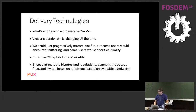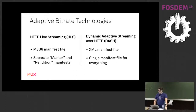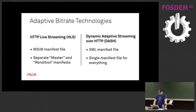So we implement what's known as adaptive bitrate or ABR technologies. We encode multiple bitrates and multiple resolutions, segment the output files into different chunks, and then switch between those chunks based on what bandwidth we saw the last few times. There are two big adaptive bitrate technologies: HTTP Live Streaming (HLS) and Dynamic Adaptive Streaming over HTTP (DASH). All ABR standards work on the basis of a manifest or playlist file, which gives you metadata about what streams are available. In HLS that's an M3U8 file - a variant of the old MP3 playlist format - using a master manifest and rendition manifests. DASH is an XML file, a single manifest for everything, so there are fewer round trips to initialize a stream.